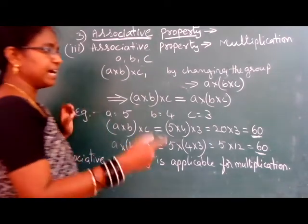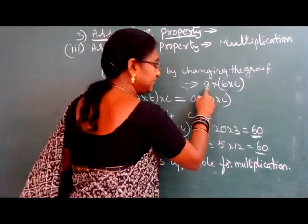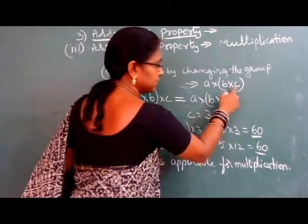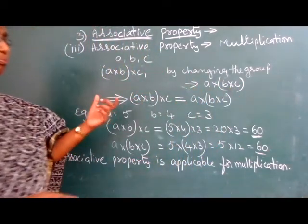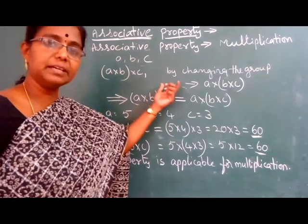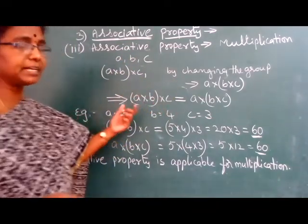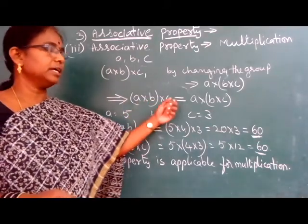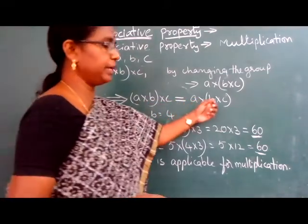Next, by changing the group, A into B into C, here A as one group, B into C as one group. Here their result will be equal. By symbolical term we can say A into B into C is equal to A into B into C.